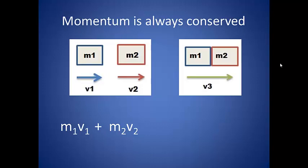If momentum is conserved, the sum of the initial momentums will be equal to the final momentum. The final momentum will be the total mass times the new velocity.